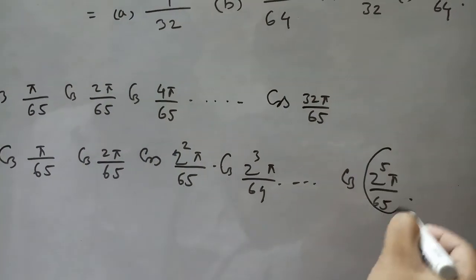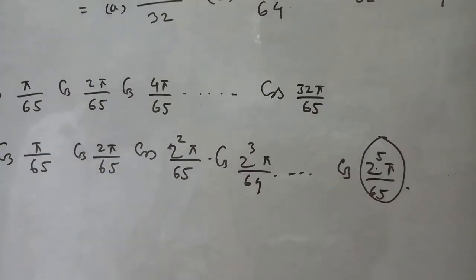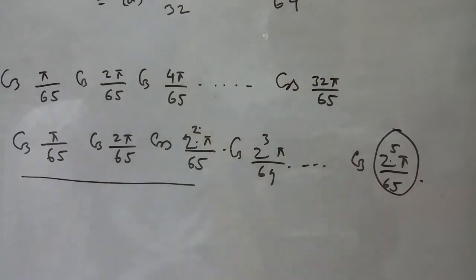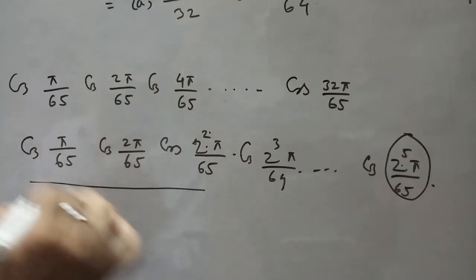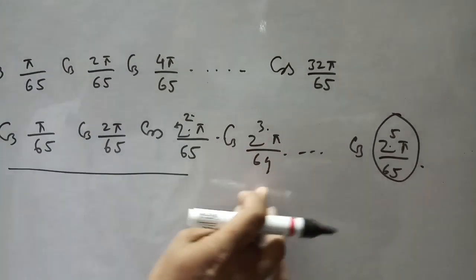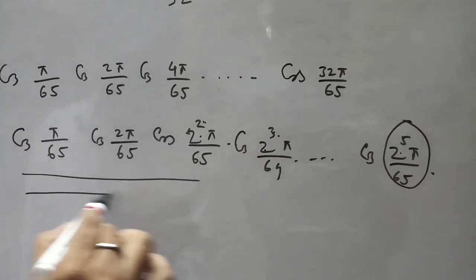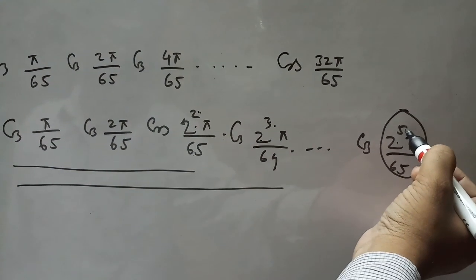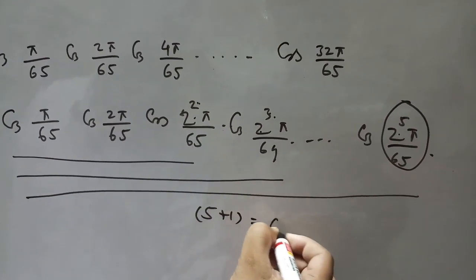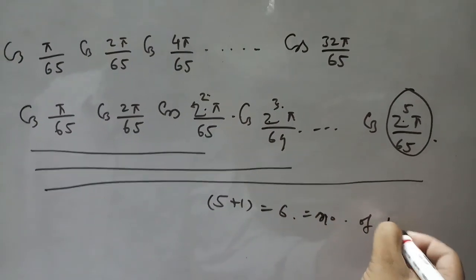Observing the pattern: the power of 2 in the last term is 5. If there are 3 terms, power of 2 is 2 (i.e., 3 terms → power 2); 4 terms → power 3; so power of 2 being 5 means number of terms is 5 + 1 = 6. Therefore, we have 6 terms.